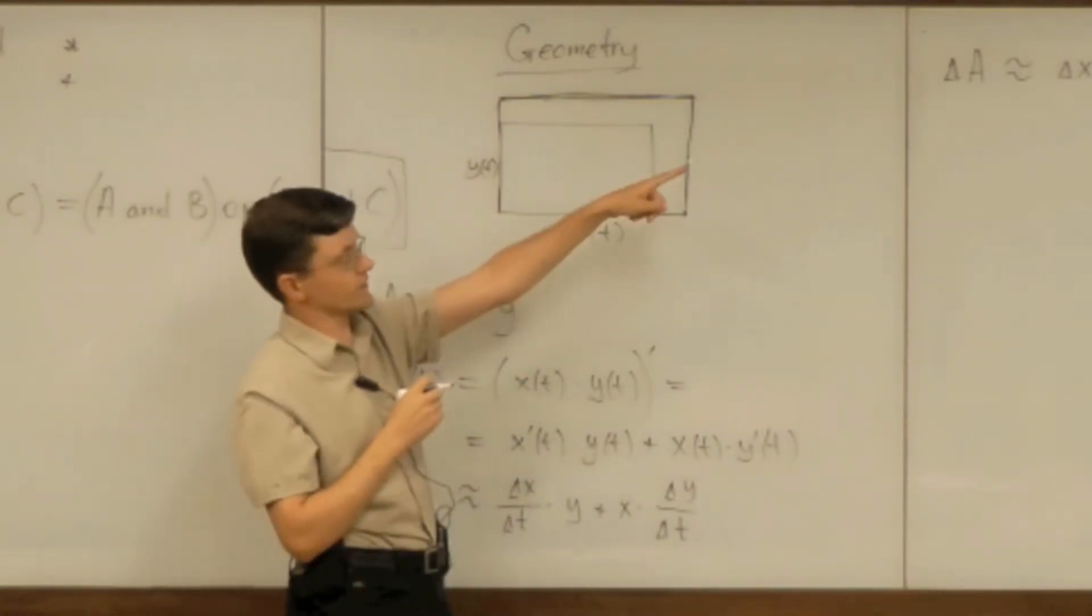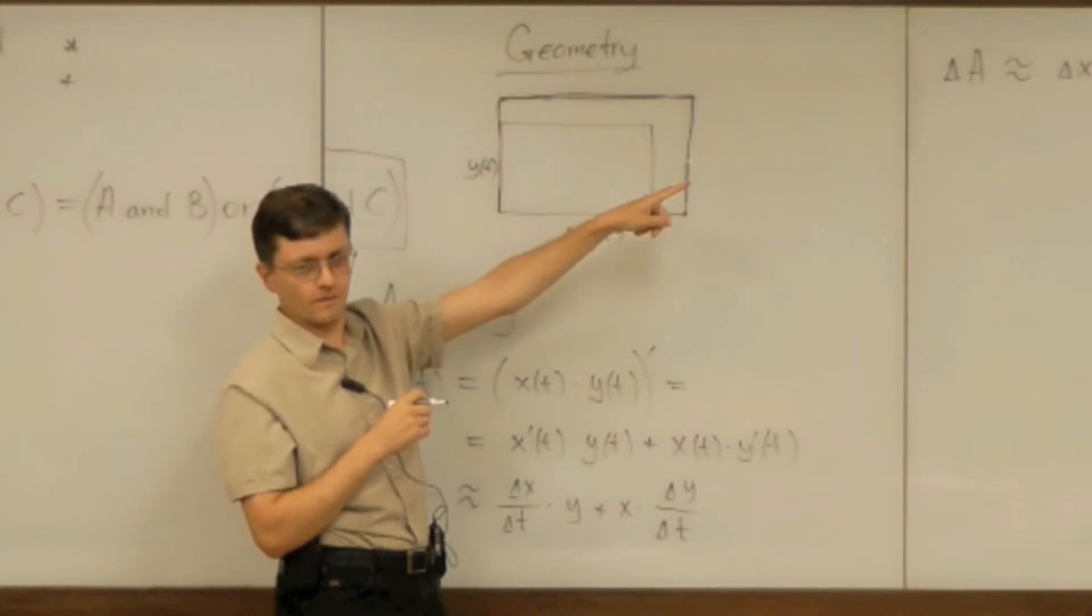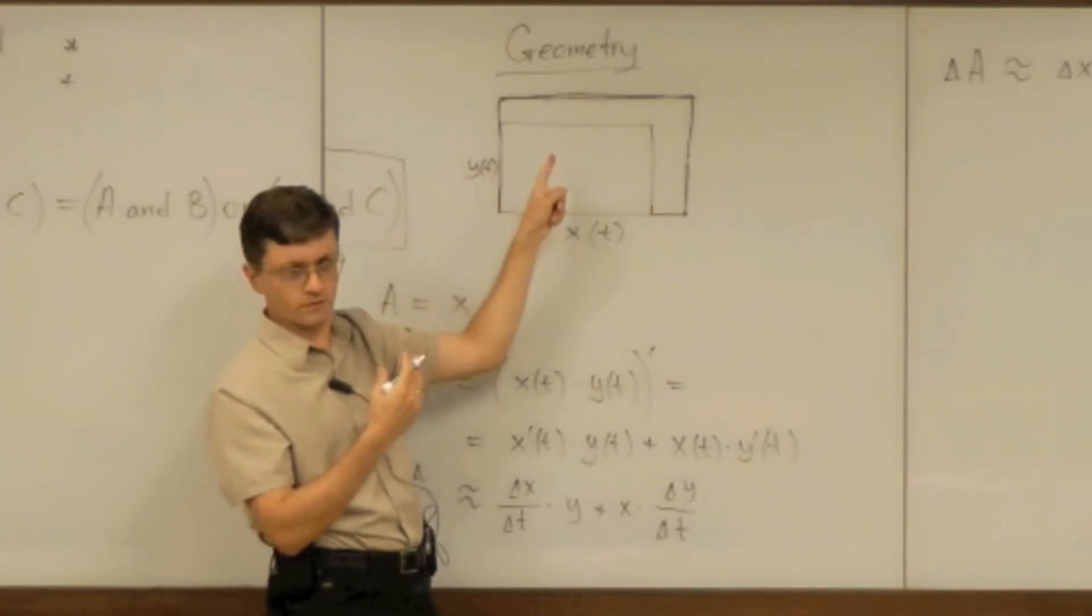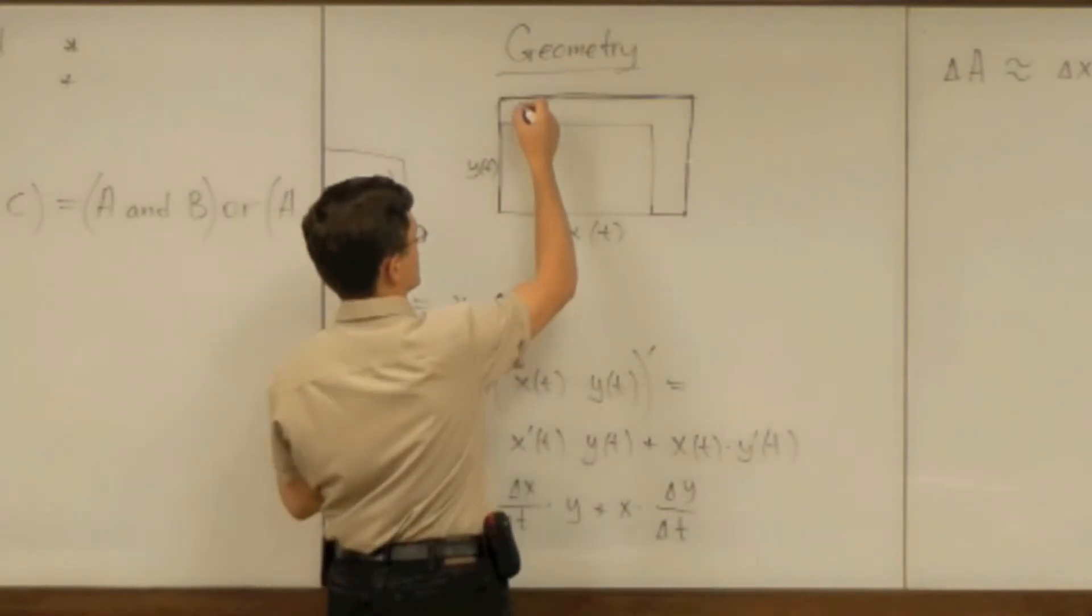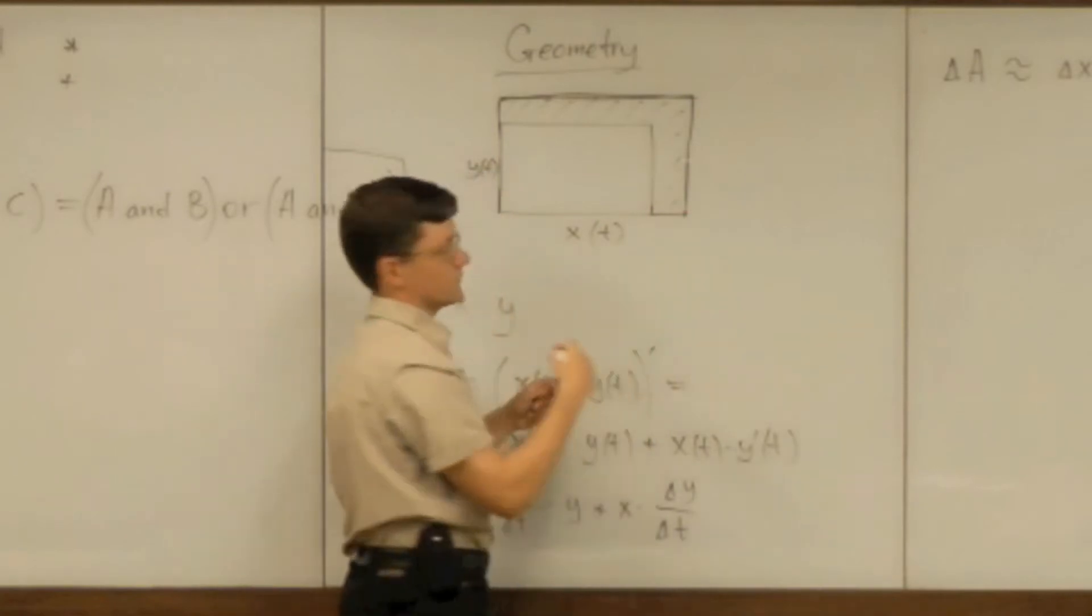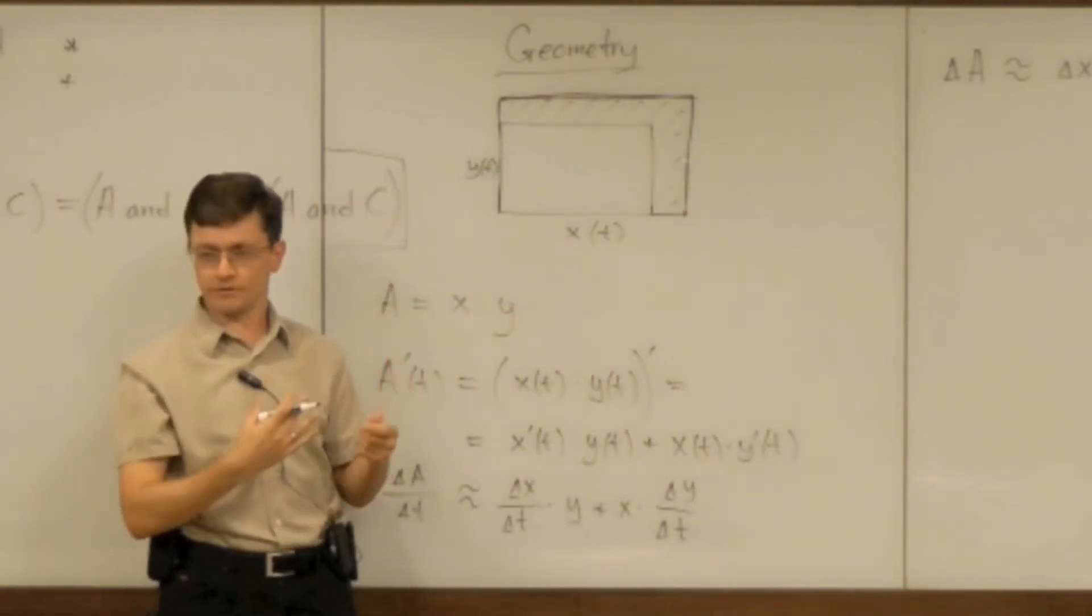So what is delta a? Let's focus on the right hand side. It's the change in the area and now we can visualize it. This change in the area is the difference between the final rectangle minus the original rectangle.